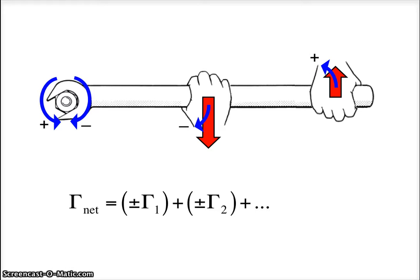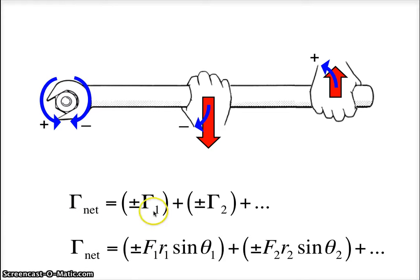We add torques together to get the net, and every individual torque is made positive or negative based on its direction. We could write the net torque equation like this, or we could write it by breaking each torque into FR sine theta. Force times distance from pivot times sine of the angle.